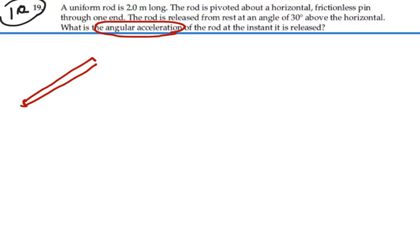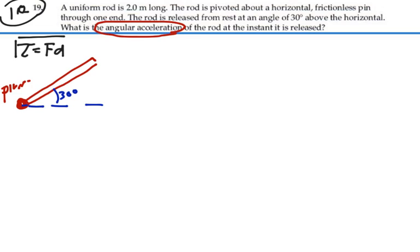So here we have this rod. It's got a pivot, and it's up at an angle of 30 degrees. Since we're thinking in terms of torque, we want to identify the forces and the moment arms acting on this rod. There's really only one external force acting on this rod, and that is gravity. It's acting at the center of mass of the rod, pulling straight down towards the center of the earth. So we have an mg pulling down like this.